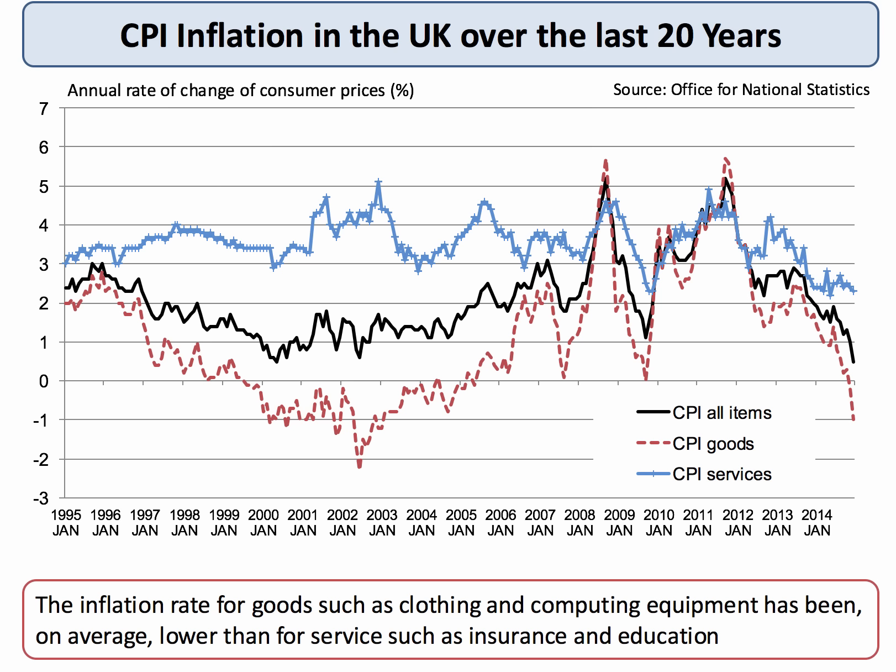Here's some data showing the CPI in the UK since 1995, showing the annual rate of change of prices — in other words, inflation. The blue line represents services, from haircuts through to school fees and physiotherapy appointments — typical services like restaurant meals. That has remained positive and indeed above 2% since 1995.